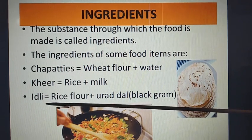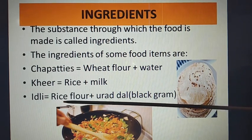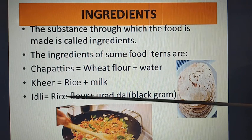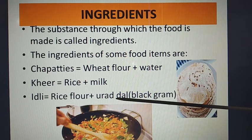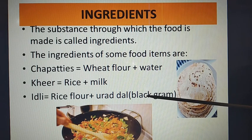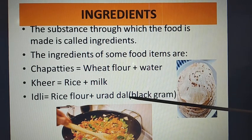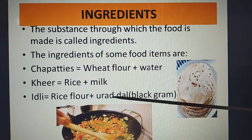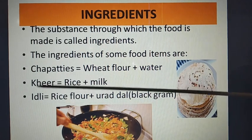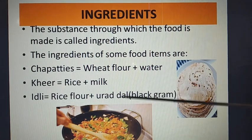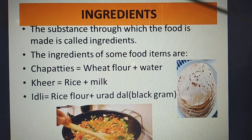One more example is idli. For making idli, the ingredients required are rice flour and urad dal, also known as black gram. So the conclusion is that the substances required to make a particular dish are called the ingredients of that particular dish or food item.